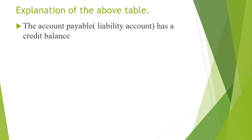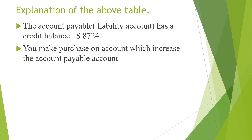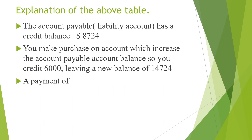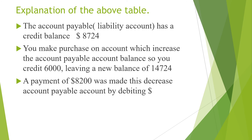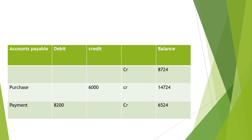In summary: accounts payable is a liability account with a credit balance of $8,724. You make a purchase on account which increases the balance, so you credit $6,000, leaving a new balance of $14,724. When you make a payment of $8,200, the new balance will be $6,524 remaining in accounts payable.